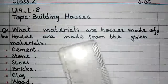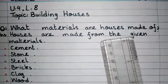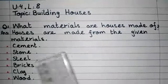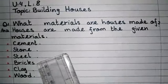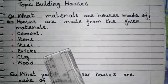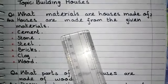Number one cement, number two stone, number three steel, number four bricks, number five clay, number six wood. These materials are made from the houses and buildings.